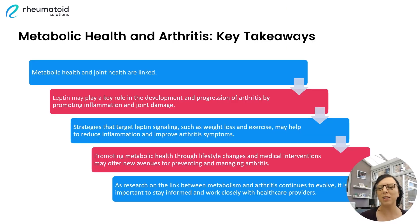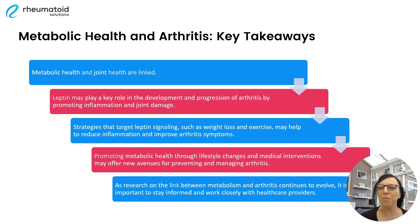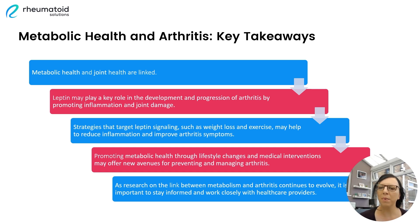So let's sum up what we've been talking about during this episode. We've spoken about leptin, this important hormone involved in regulating metabolism, and how it may be linked to the development and progression of arthritis symptoms by promoting inflammation and joint damage. However, there is hope. We've spoken about strategies we can use to target leptin signalling — these include weight loss and exercise — which can potentially reduce inflammation and help to improve arthritis symptoms. And of course, it's important to promote general metabolic health for our overall well-being. By using these simple lifestyle changes, we can help to find new ways to prevent and manage our arthritis symptoms.